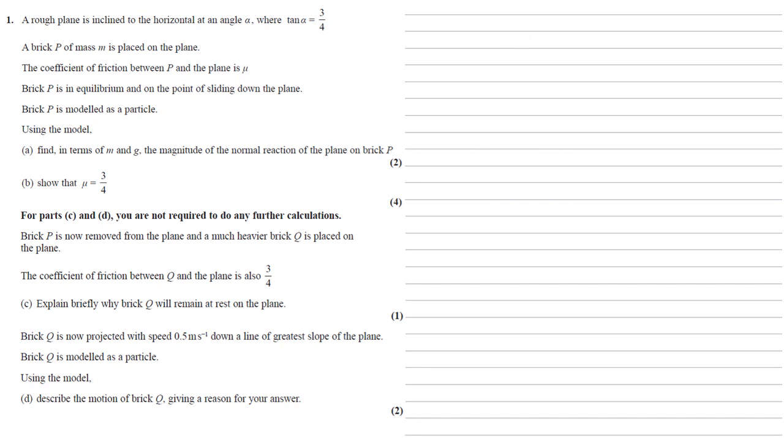Parts c and d were not required to do any further calculations, so this is important here. Brick p is now removed from the plane, and a much heavier brick q is placed on the plane. The coefficient of friction between q and the plane is also three quarters. This hasn't changed.